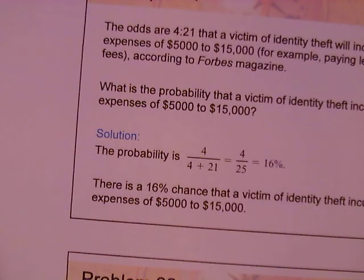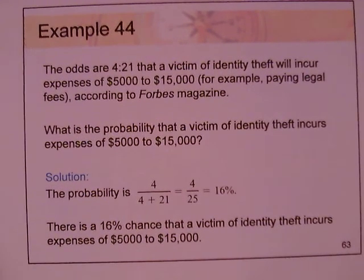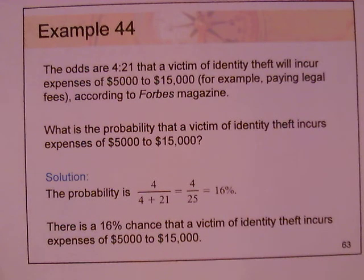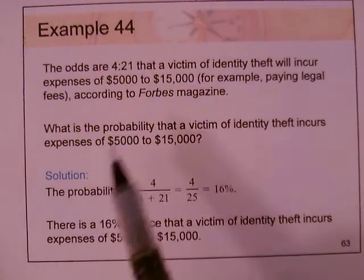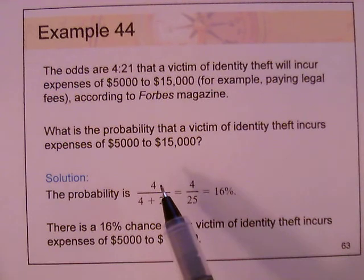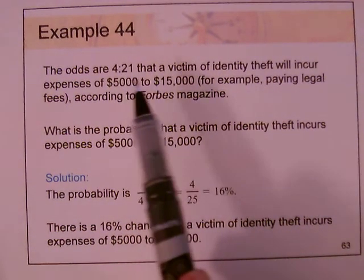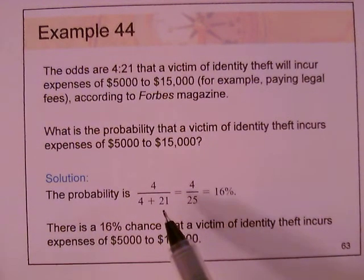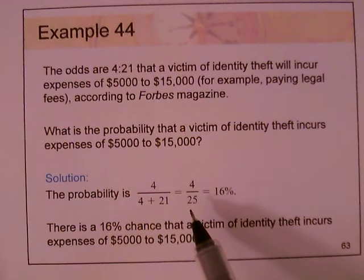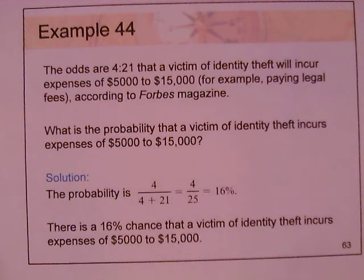For example 44, the odds are 4 to 21 that a victim of identity theft will incur expenses of $5,000 to $15,000. The probability equals 4 divided by 4 plus 21, which is 4 divided by 25. That gives 0.16 or 16%, meaning there is a 16% chance that a victim of identity theft incurs expenses of $5,000 to $15,000.